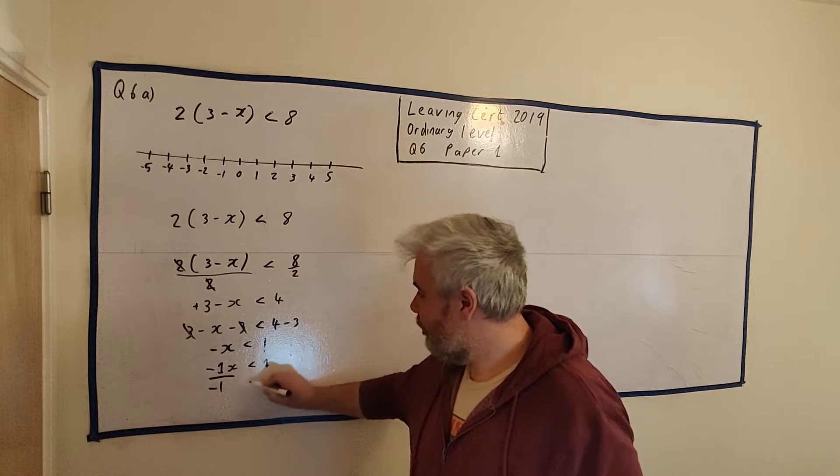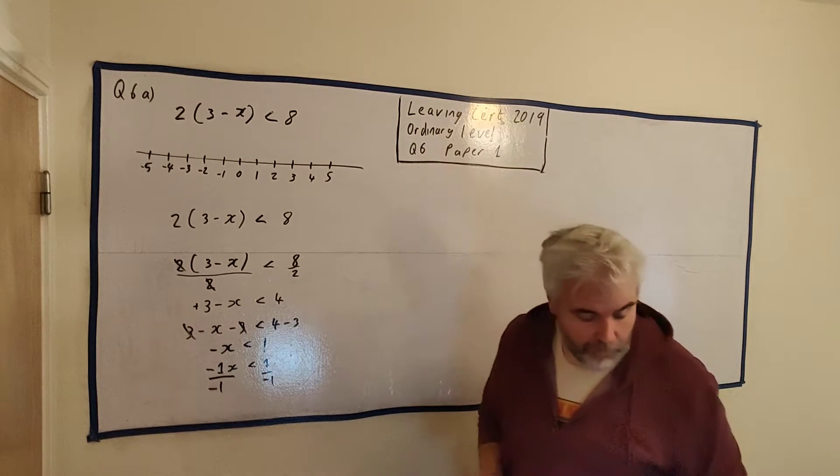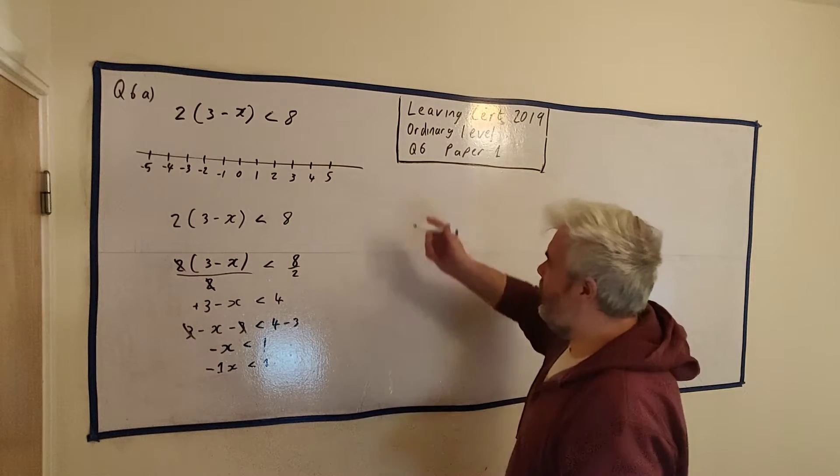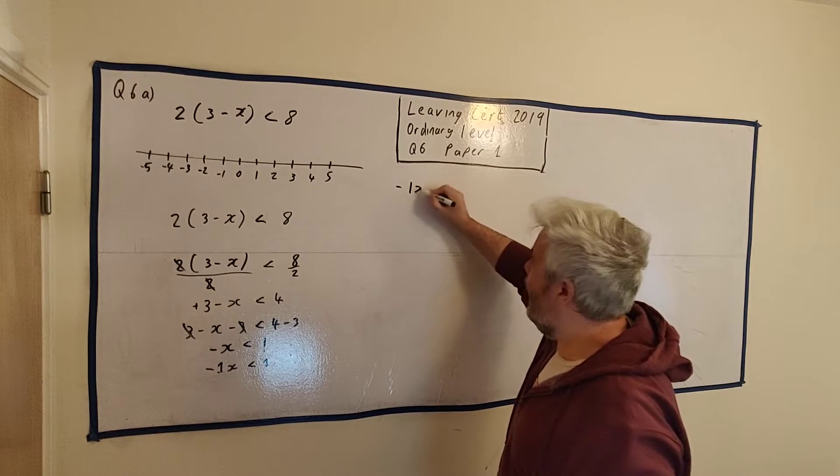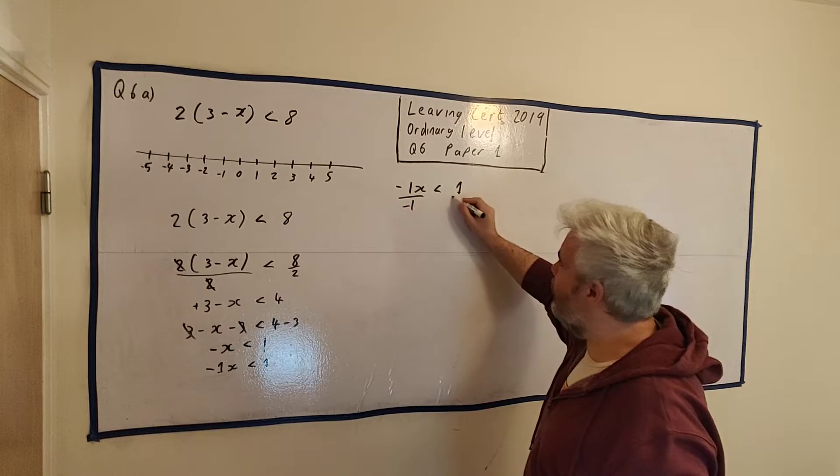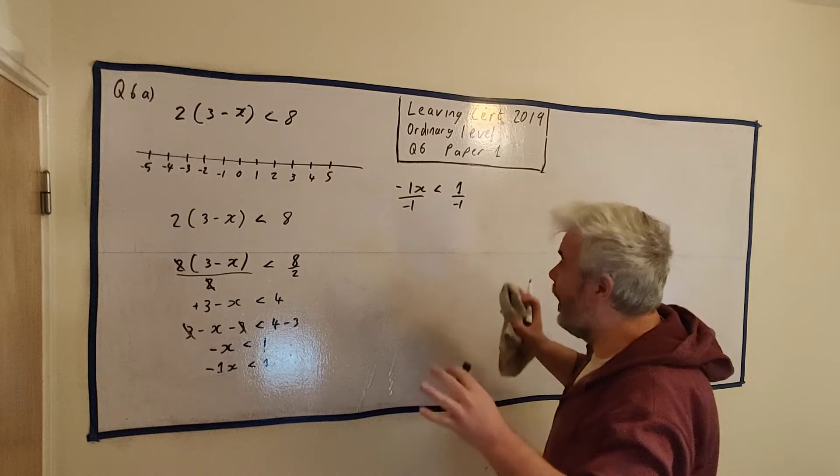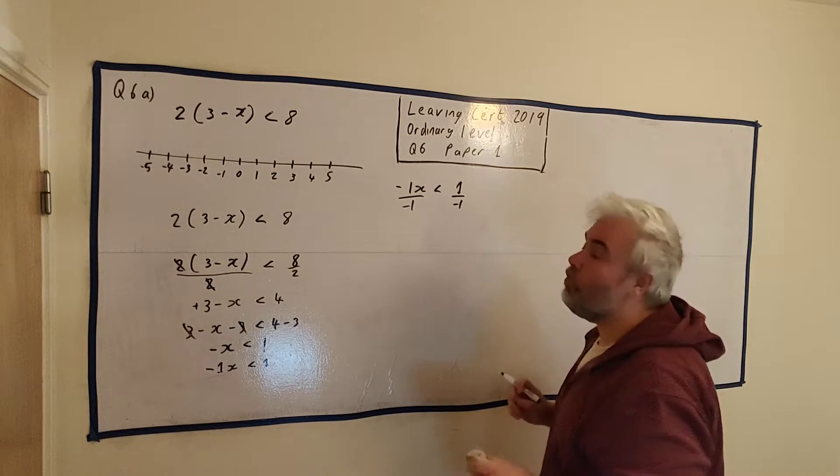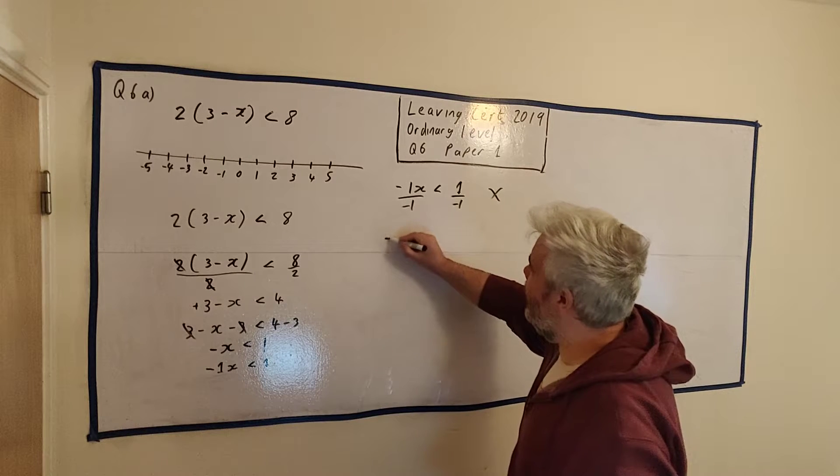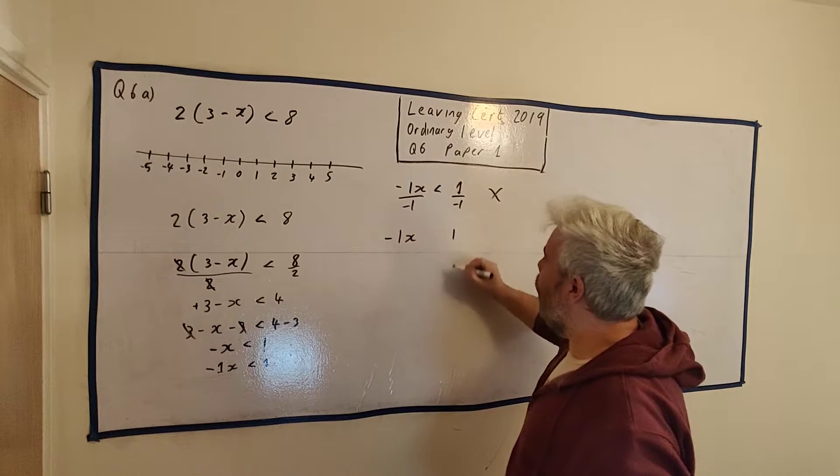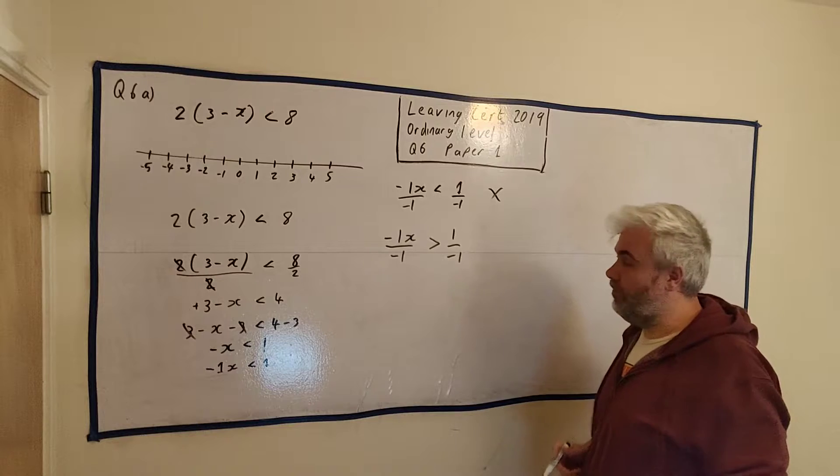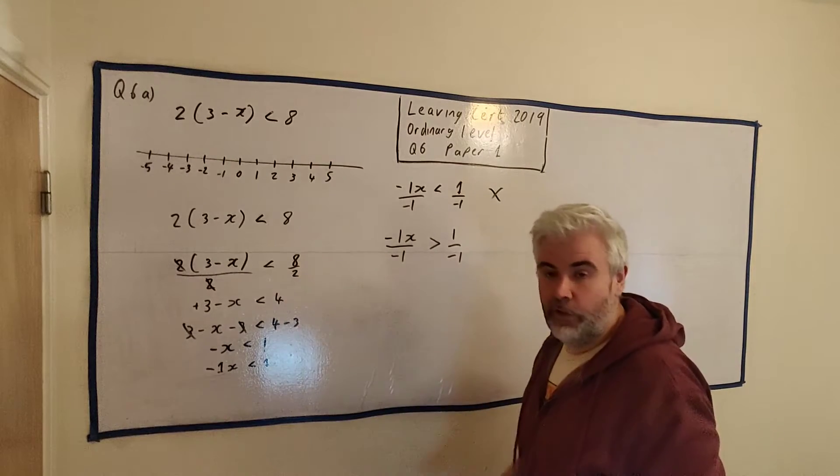So I want to get rid of that -1. So I'll divide both sides by -1, just like I did up there. That's our problem. That's where our problem arises. Let me bring it over here. -1x < 1. We'll divide by -1 and divide by -1. Alarm should go off right now. You cannot divide by a minus number without first doing something. If we divide both sides by -1, this has to change. This is the correct answer now. You have to change that sign. That's the only difference to rearranging equations.